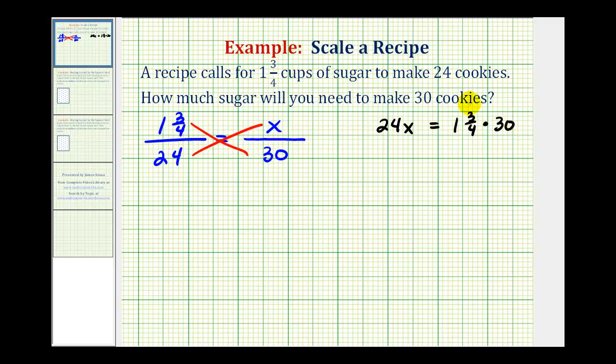Let's find this product here so we'll convert this to an improper fraction and write thirty as thirty over one. So we'll have twenty-four x equals four times one plus three that's seven, so we have seven fourths times thirty over one.